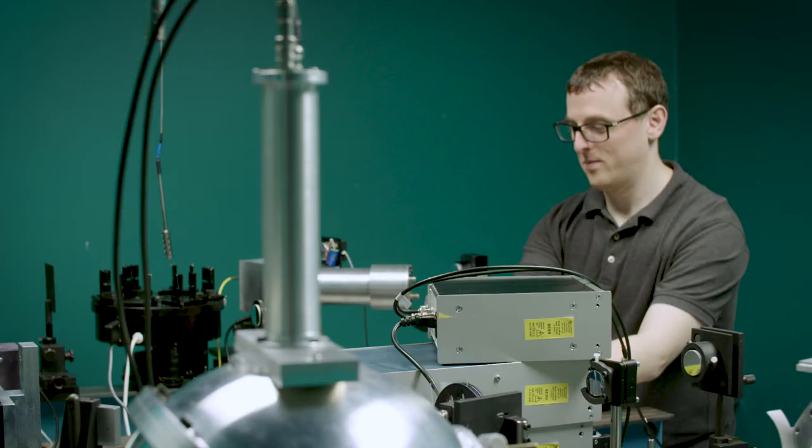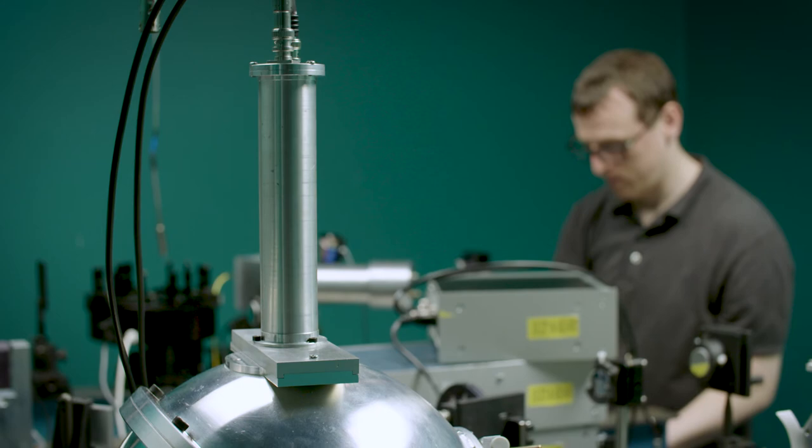If you are more interested in the total reflectance of a sample you can use an integrating sphere to measure for example six degrees diffuse reflectance. That is six degrees incidence and diffuse viewing.